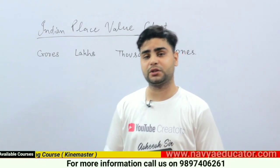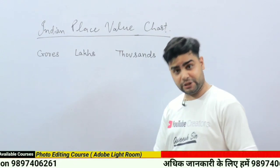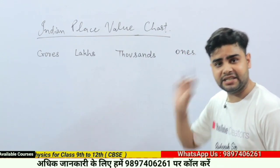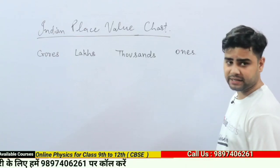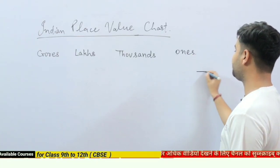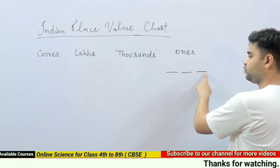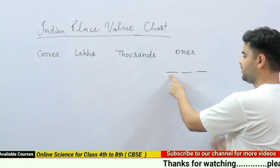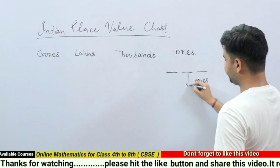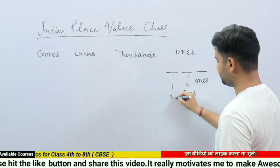These periods are also divided into place values. The Ones period is divided into three parts: the first part is called Ones, the second is called Tens, and the third is called Hundreds.